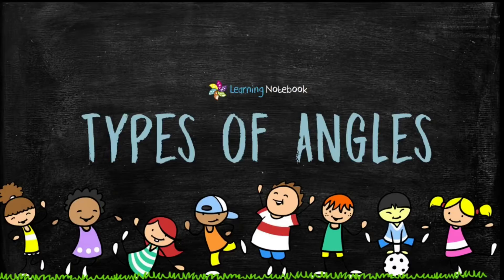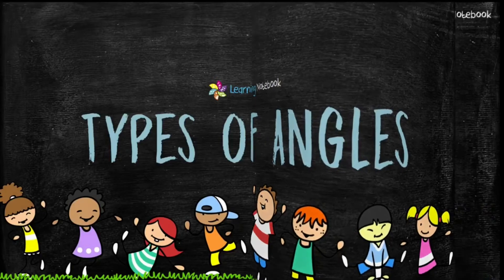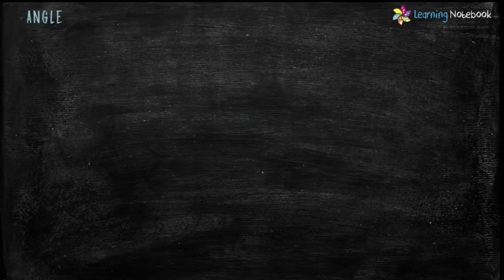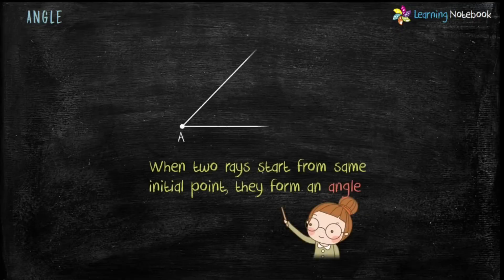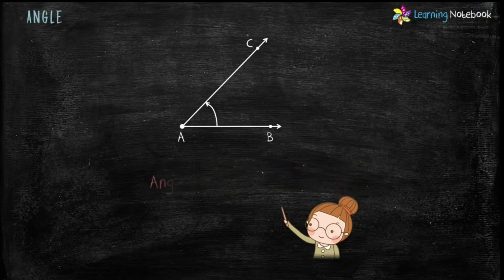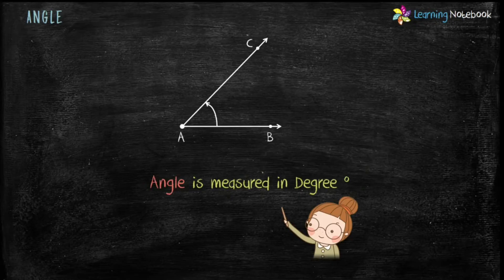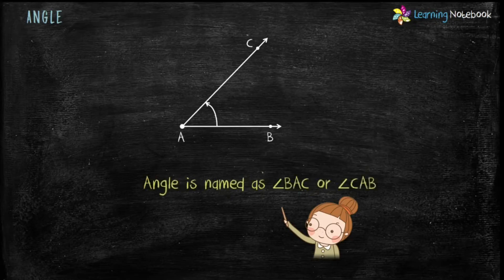So let's first revise types of angles. What is an angle? When two rays start from the same initial point, they form an angle. An angle is measured in degrees and is named as angle BAC or angle CAB.